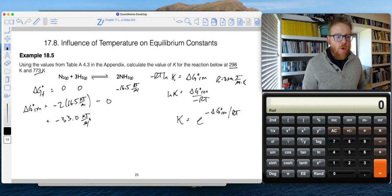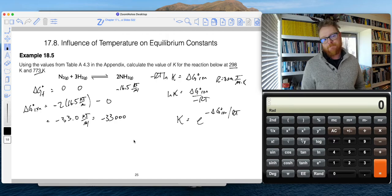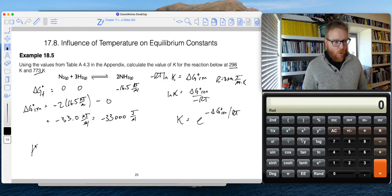So in terms of joules per mole, this is going to be negative 33, and then I'm just going to tack on three extra zeros. One, two, three, joules per mole. And now I can set this up to calculate the value of this equilibrium constant at 298K and 773K. And I'll set that up twice and then calculate them both at the same time.